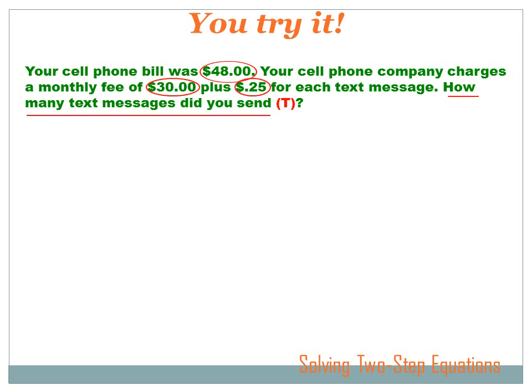Well, as always, the first thing you want to try to do in a word problem is C-U-C-C. Circle the numbers, underline the question, and then eventually go back and count and check. So let's circle here. And you're going to circle the numbers. Your cell phone bill was $48. There's a number. Better circle it. Your cell phone company charges you a monthly fee of $30 plus 25 cents for each text message. How many text messages did you send? Now, that's the question. So let's underline it. Make sure we answer the right thing. And this is an algebra problem. So we've got to come up with a symbol for how many text messages did you send. So let's just pick T for text.